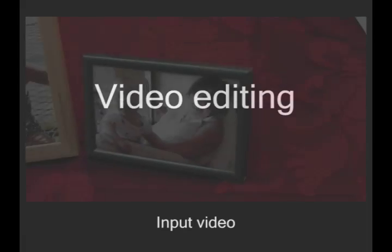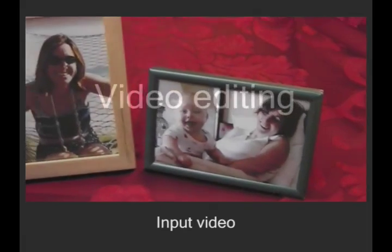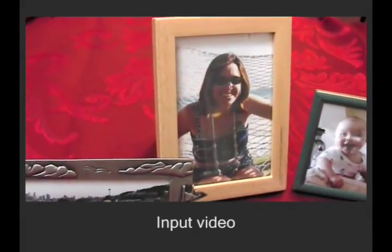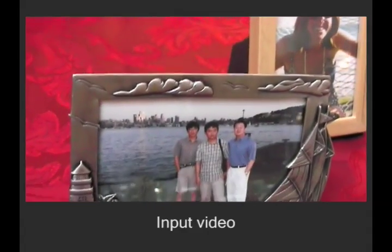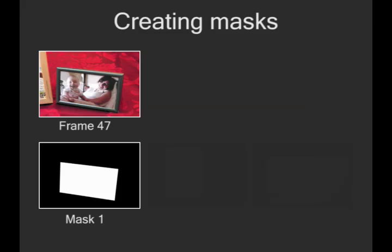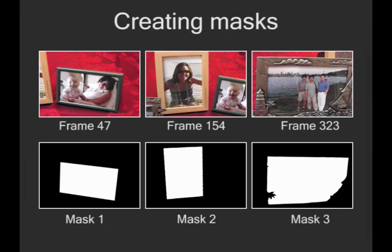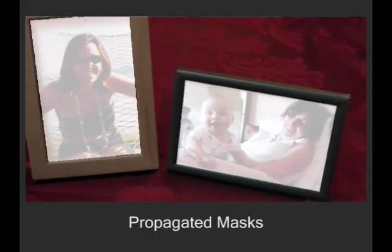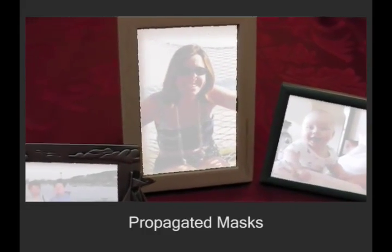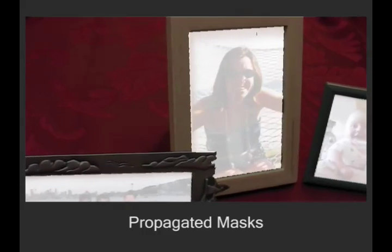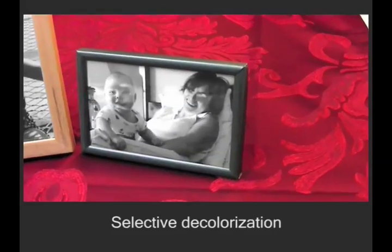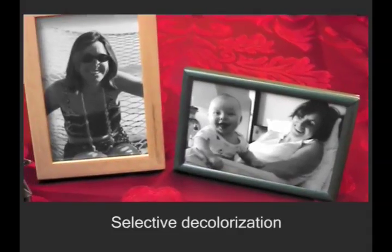We can also easily edit videos by modifying a few video frames or photographs. For example, by simply creating a single matte for each picture frame, we generate a dynamic matte for the entire video. The resulting matte is consistent with the occlusions in the scene. This matte can be used to create a variety of effects such as transforming the pictures to black and white.